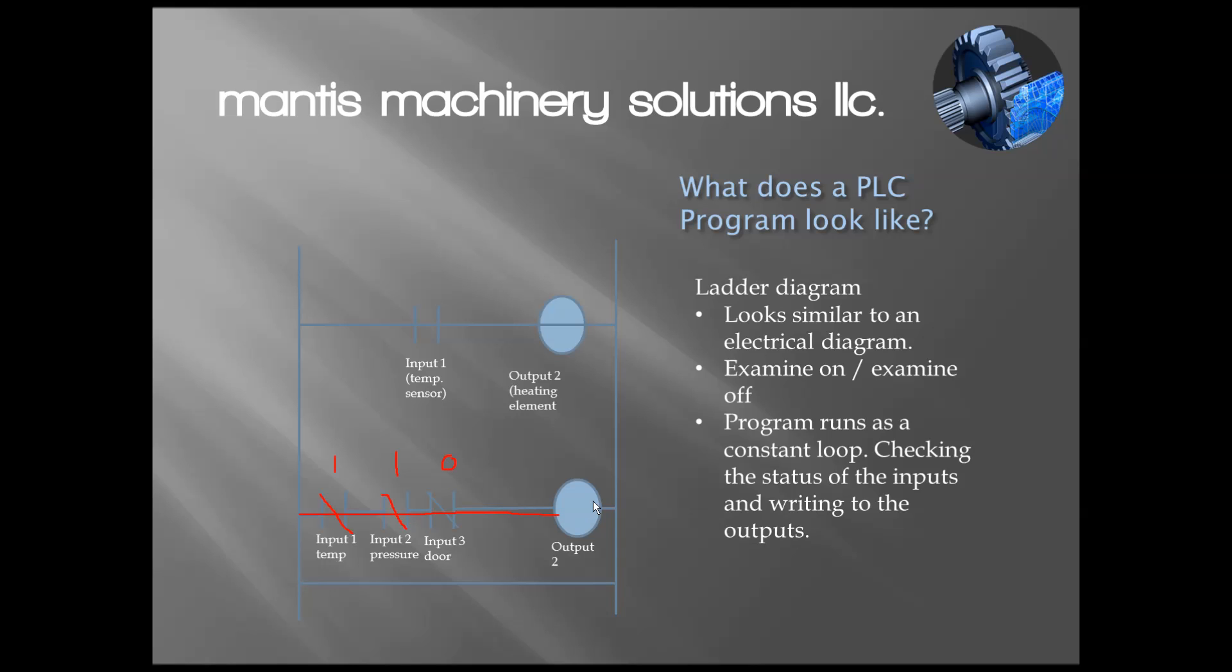For example, I was talking about this heating element - imagine it's a tank. I don't want the heaters to turn on unless the temperature is low, I have an overpressure condition, and I want to make sure the safety door is closed. So if I open the door, it would create a one here. We create an output and output number two goes high and produces 24 volts.